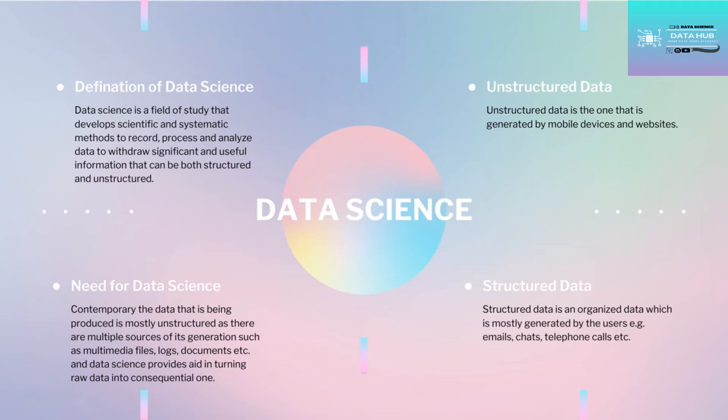There are two types of data. The first is unstructured data, which is data generated by mobile devices and websites. The other is structured data, which is organized data mostly generated by users — for example, emails, chats, telephone calls, etc.